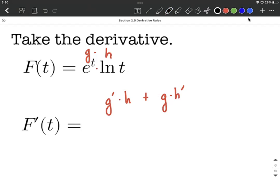So jumping right in here, the derivative of e to the t is just going to be e to the t, multiplied by h of t, which is natural log of t.